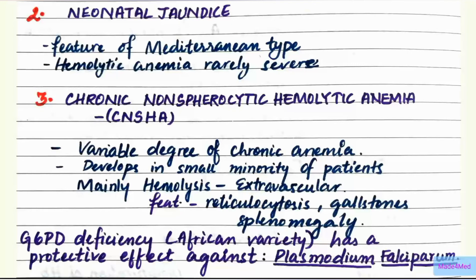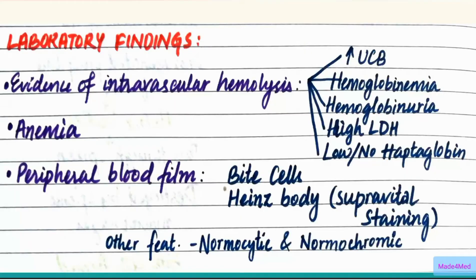G6PD deficiency, mainly the African variety denoted by G6PD A−, has a protective effect against Plasmodium falciparum. In this disease there is increased oxidative stress in the RBC, in which the parasite cannot survive, leading to resistance to the parasite and thus to malaria.